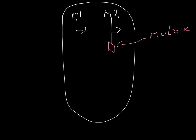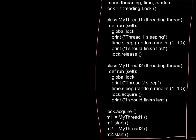While M2 waits at the locked mutex, M1 carries on, does its output, and then unlocks the mutex — like using a key to open the door. Once the mutex is unlocked, M2 can continue and print its output. The implication is that M2, no matter how short its processing takes, will wait until M1 has done its output before it can proceed.